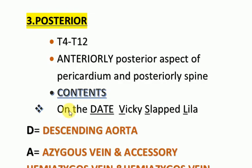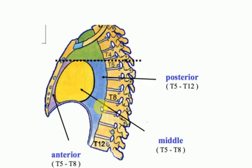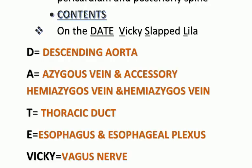Now discussing the last part — the posterior mediastinum. It is from the level of T4 to T12. Anteriorly, the posterior aspect of pericardium is present, and posteriorly, the spine is present. This image shows the posterior mediastinum from T5 to T12.